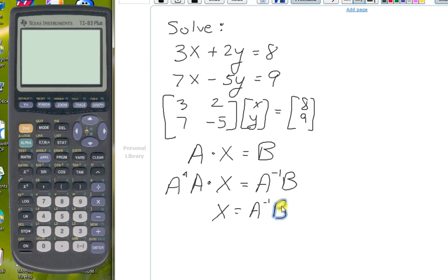So now we can go to our graphing calculator. We have to first enter matrix A, so we're going to go to the second matrix, and go to the edit menu, and enter for matrix A. We want a 2 by 2 matrix.